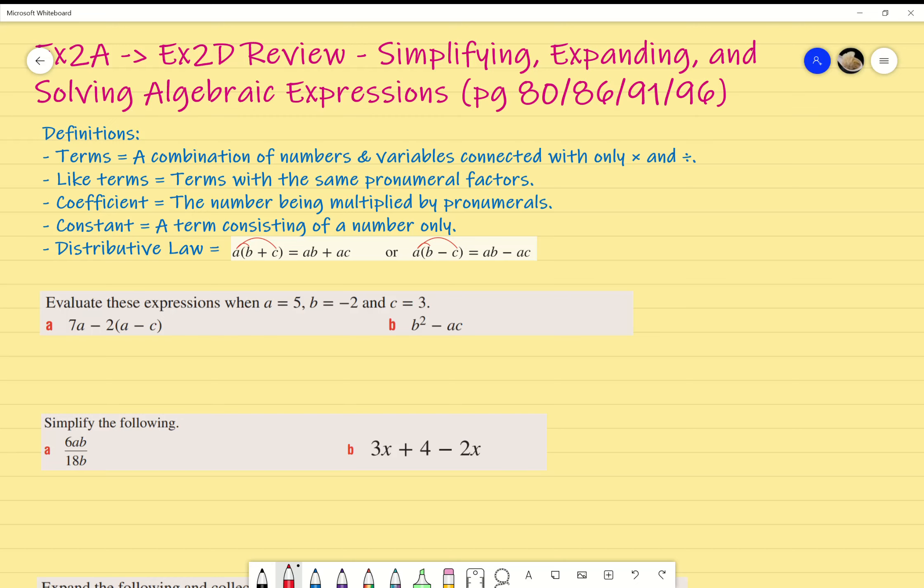So a couple definitions. Terms: a combination of numbers and variables connected only by multiply or divide. For example, AB over C, which is A times B all divided by C, is a term. A variable or pronumeral is basically anything represented by a single letter.